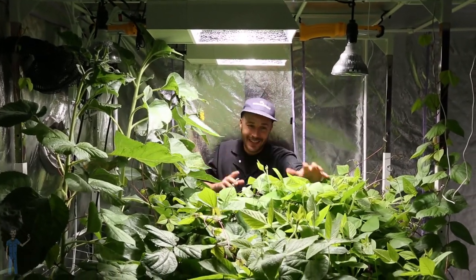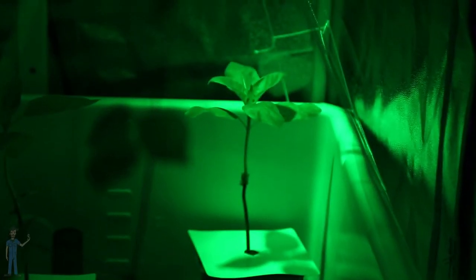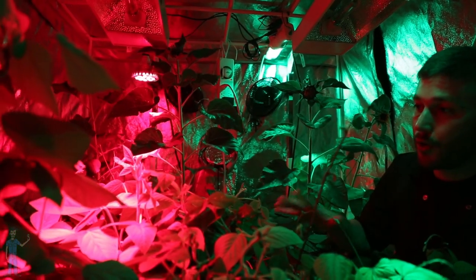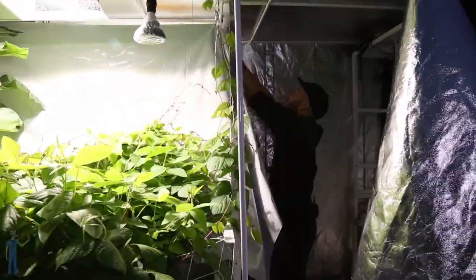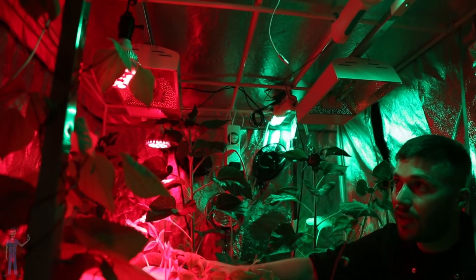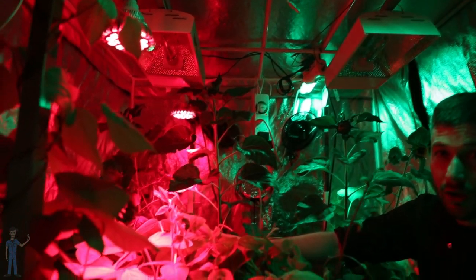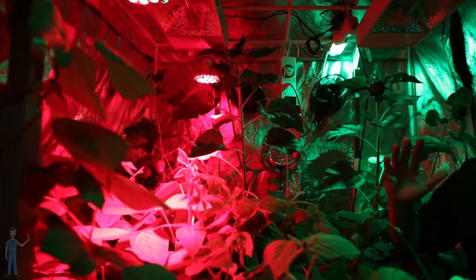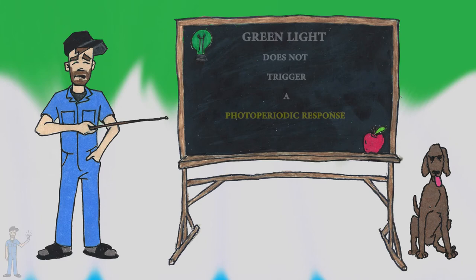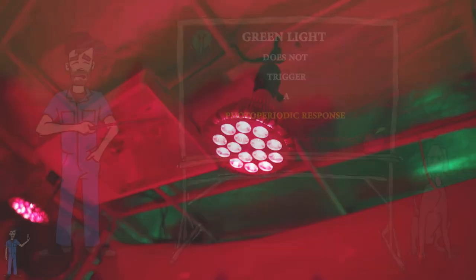On this side, I interrupted the night, and on this side I didn't. These are all short day crops. Both sides received a 12-hour photo period with a divider between them. This side received one hour of red light during the middle of its dark cycle, and this side received one hour of green light during its dark cycle. Green light doesn't trigger a photo periodic response, yet the red light does.